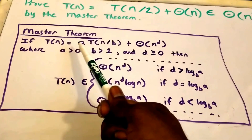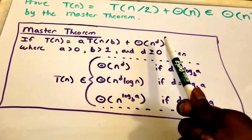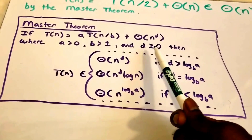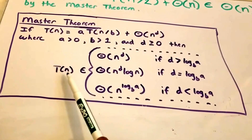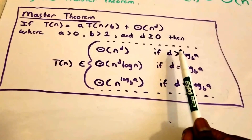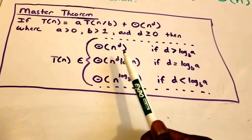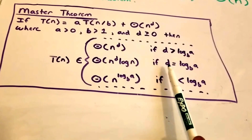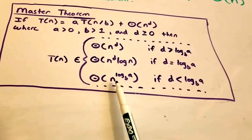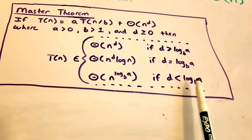The master theorem states that if T(n) is in the form a·T(n/b) + Θ(n^d), where a > 0, b > 1, and d ≥ 0, then: T(n) ∈ Θ(n^d) if d > log_b(a); T(n) ∈ Θ(n^d · log n) if d = log_b(a); and T(n) ∈ Θ(n^(log_b(a))) if d < log_b(a).